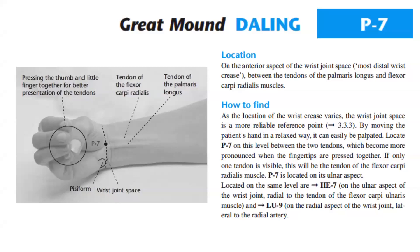Location: on the anterior aspect of the wrist joint space, the most distal wrist crease between the tendons of the palmaris longus and flexor carpi radialis muscles. To find Pericardium 7, as the location of the wrist crease varies, the wrist joint space is a more reliable reference point. By moving the patient's hand in a relaxed way, it can easily be palpated. Locate Pericardium 7 on this level between the two tendons, which become more pronounced when the fingertips are pressed together. If only one tendon is visible, this will be the tendon of the flexor carpi radialis muscle; Pericardium 7 is located on its ulnar aspect.